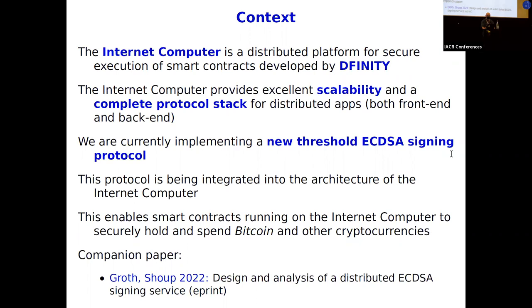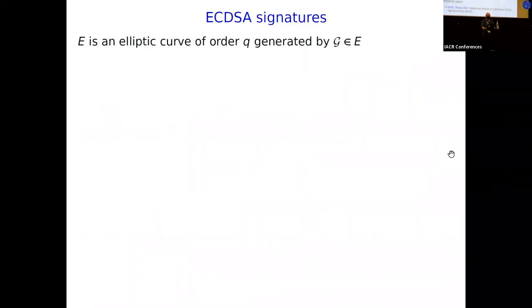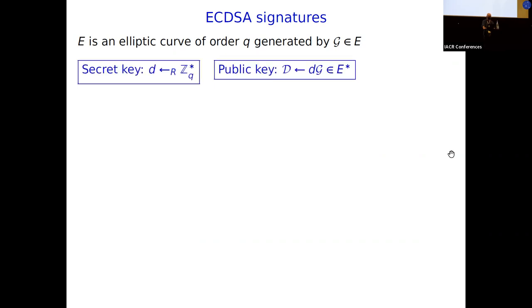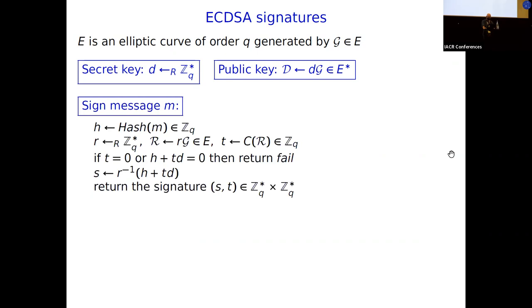This is the MPC session. I'm not really going to talk about a secure multi-party protocol for ECDSA signing — that's in a companion paper. In this talk I'll be talking about just the analysis of a non-threshold ECDSA that's appropriate for analyzing a distributed protocol. To recall ECDSA signatures: we have an elliptic curve of order q and a generator g. The secret key will be little d, the public key will be big D. You hash the message, pick a random r, multiply your generator by that to get the group element R.